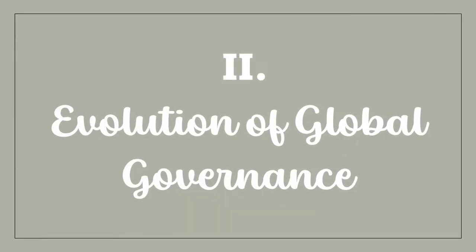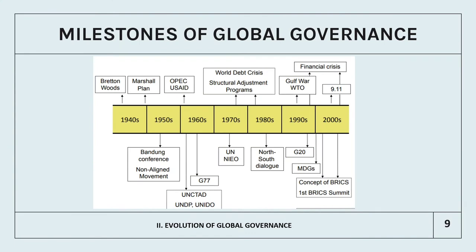Now let's proceed to the second part of this topic, which is about the evolution of global governance. The diagram on screen shows the milestones of global governance since World War II, from the Bretton Woods system to the Marshall Plan in the early 1940s, down to the rise of the financial crisis and the concept of BRICS and the first BRICS summit in the 2000s. To sum this all up, global governance began in the mid-19th century, became particularly prominent after World War I, and more so after World War II. Since then, the number of international organizations has increased substantially, as have the actors involved — whether states, non-governmental organizations, firms, or epistemic communities.